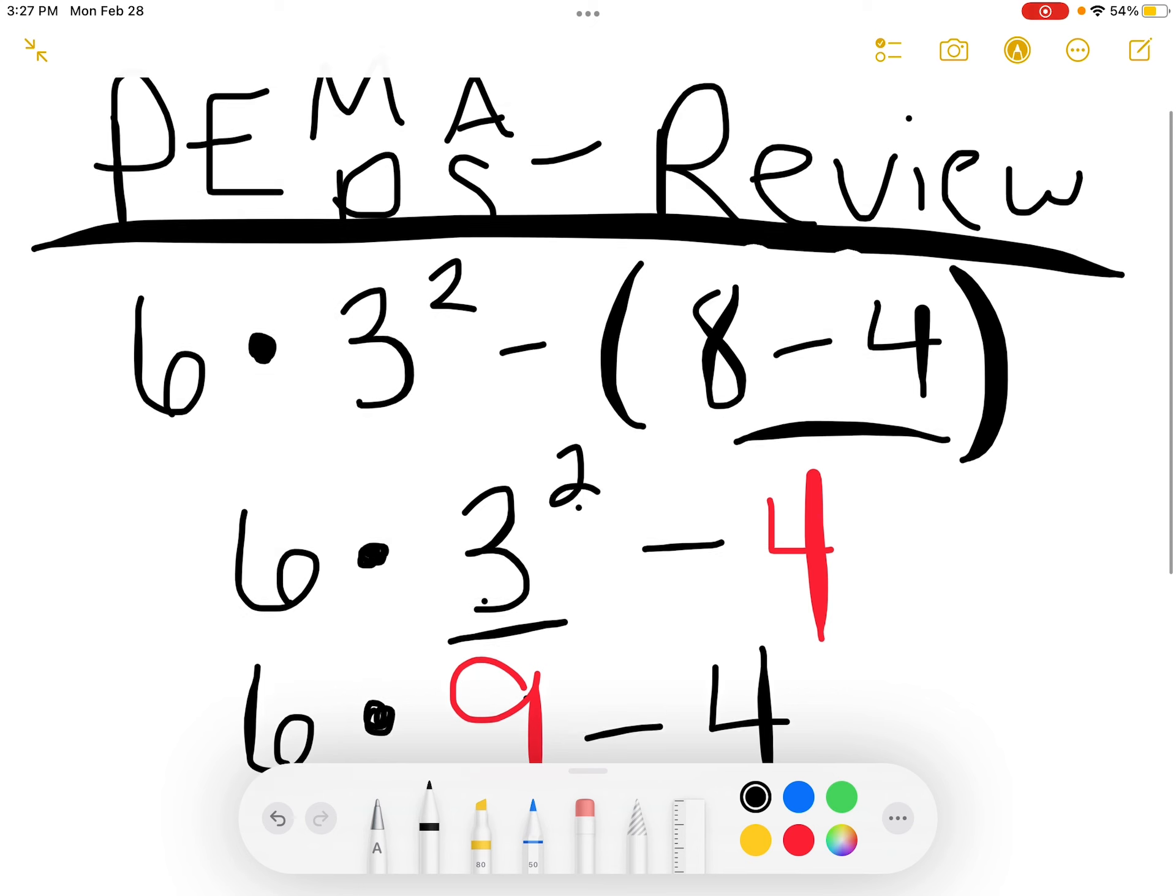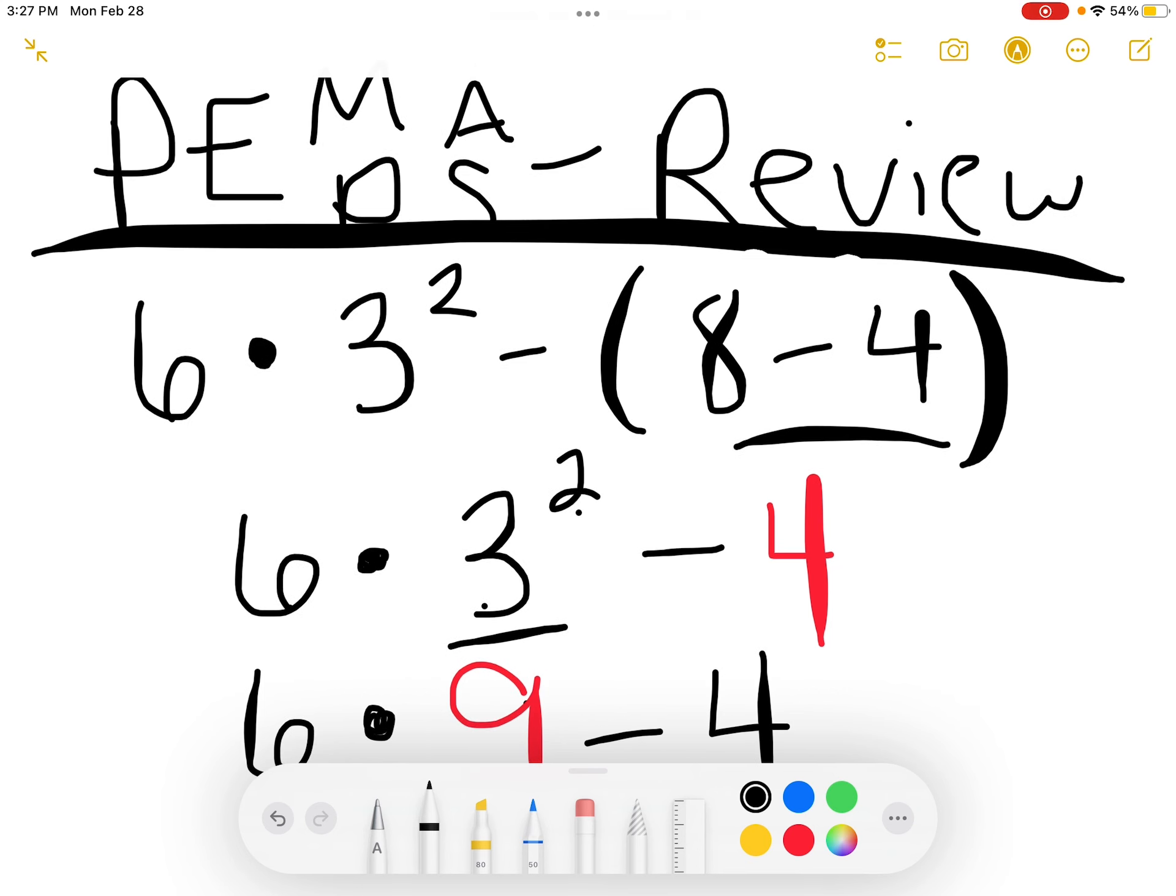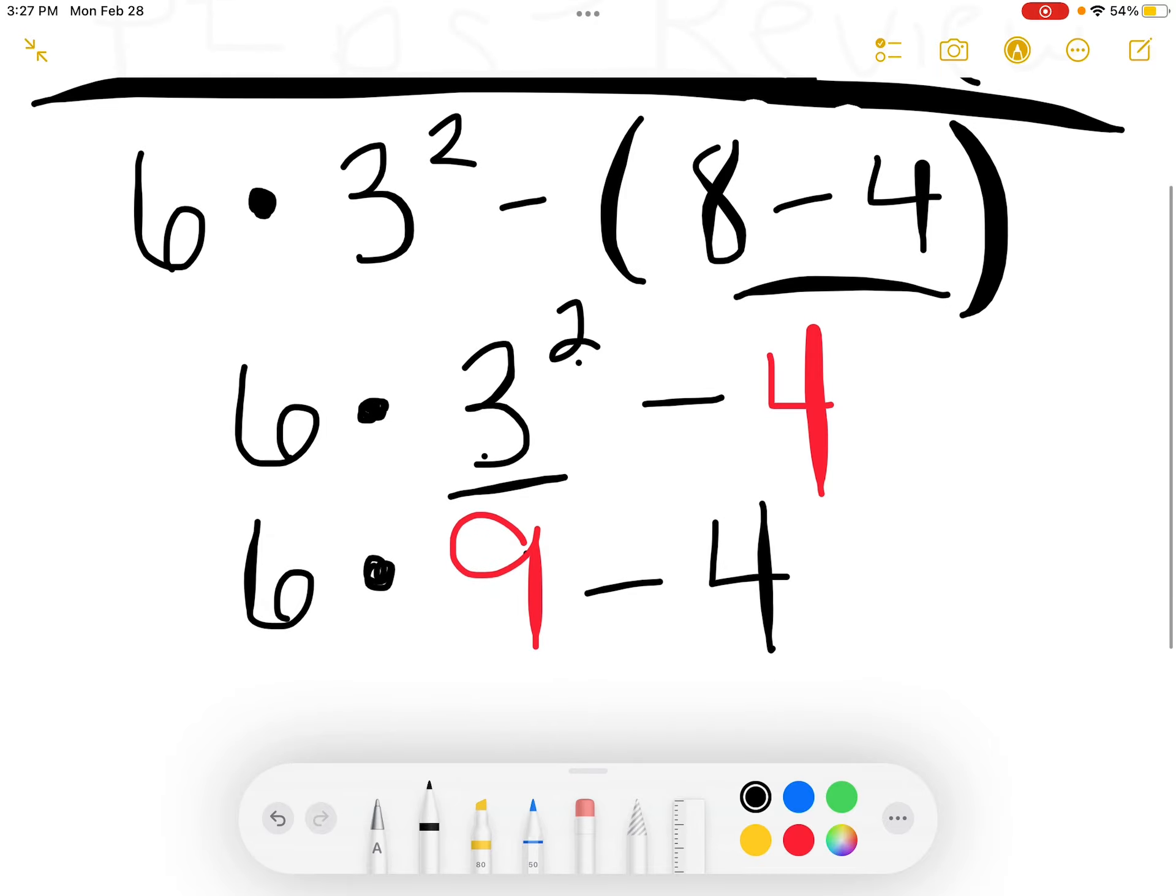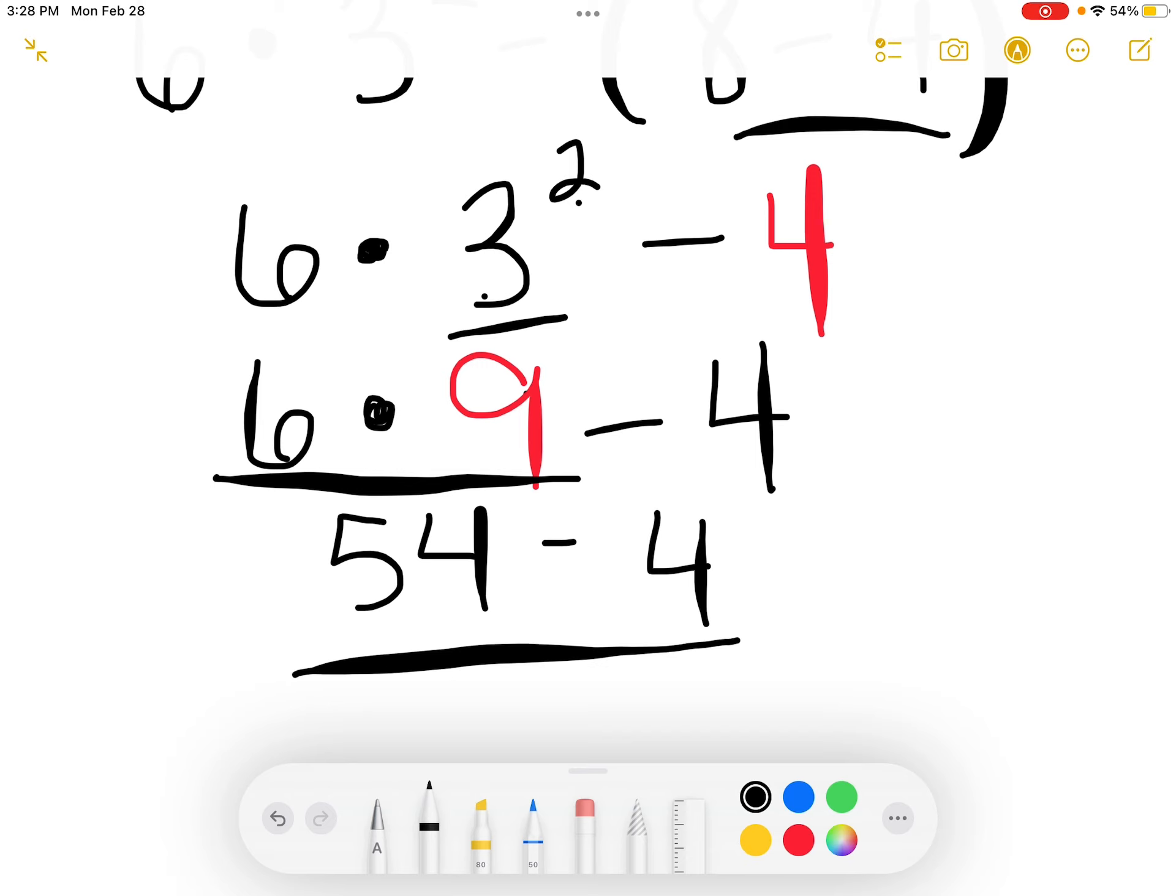Next, we have multiplication or subtraction. Which one would come first? If we look at PEMDAS, that multiplication and division should come first. So we're going to take care of 6 times 9 first. That would give us 54. And 54 minus 4 gives us our final answer of 50.